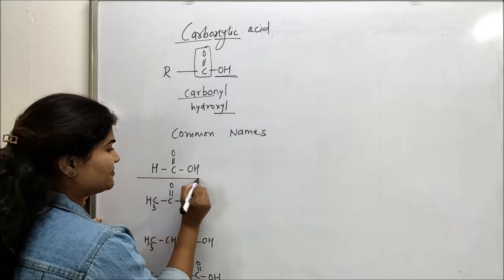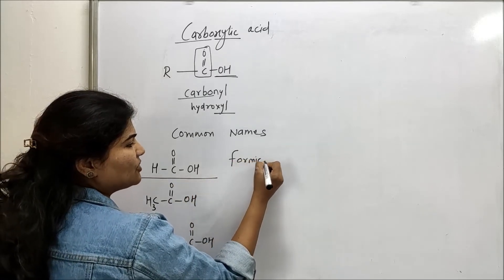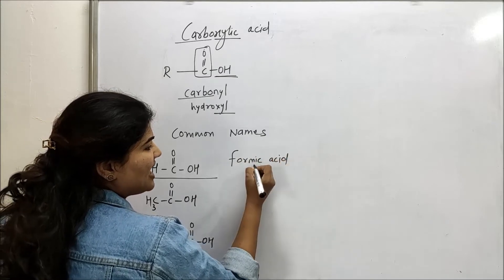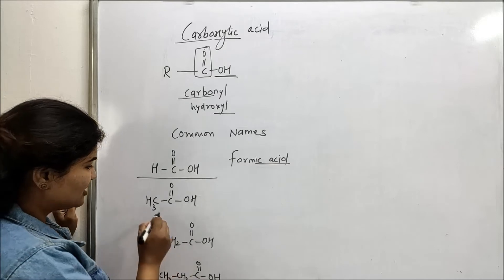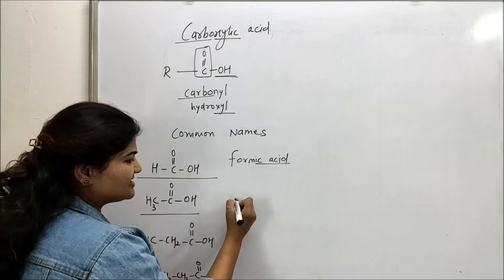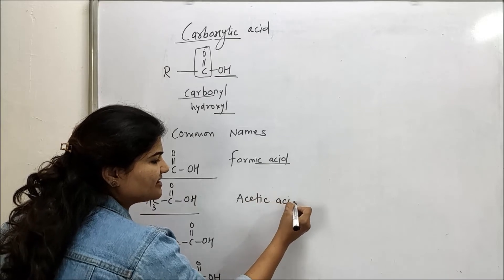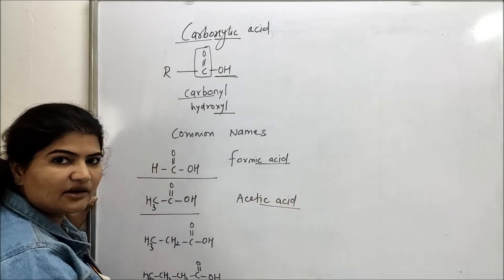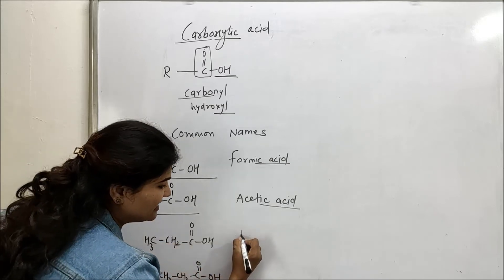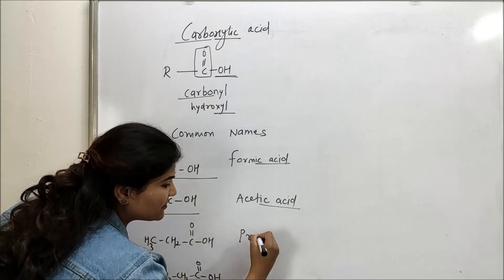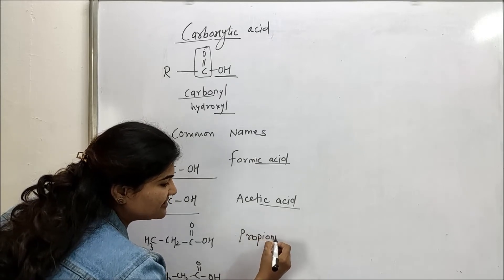The name for this first compound is formic acid. Now as you can see, IC acid is going to be the suffix for common system of nomenclature. Now this is acetic acid. Again you can see IC acid is the suffix. Then we have 1, 2, 3 carbon containing derivative of acid and it will be called as propionic acid.